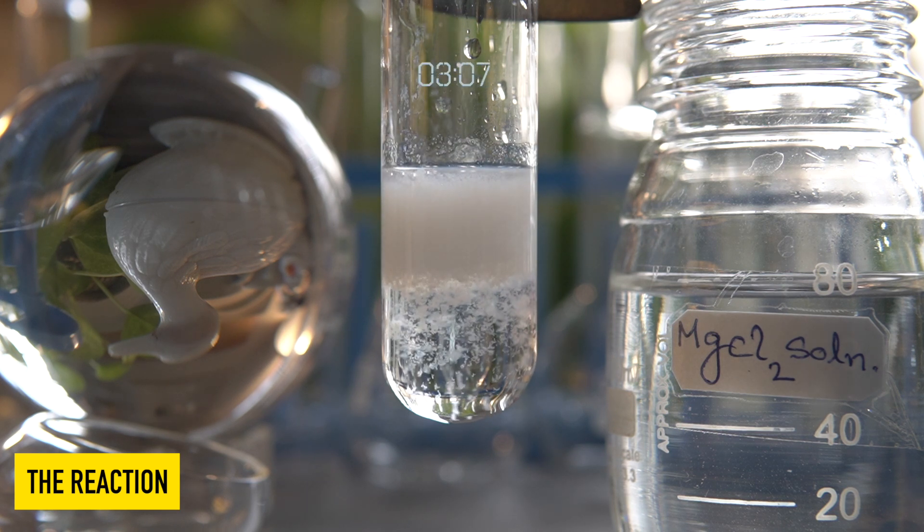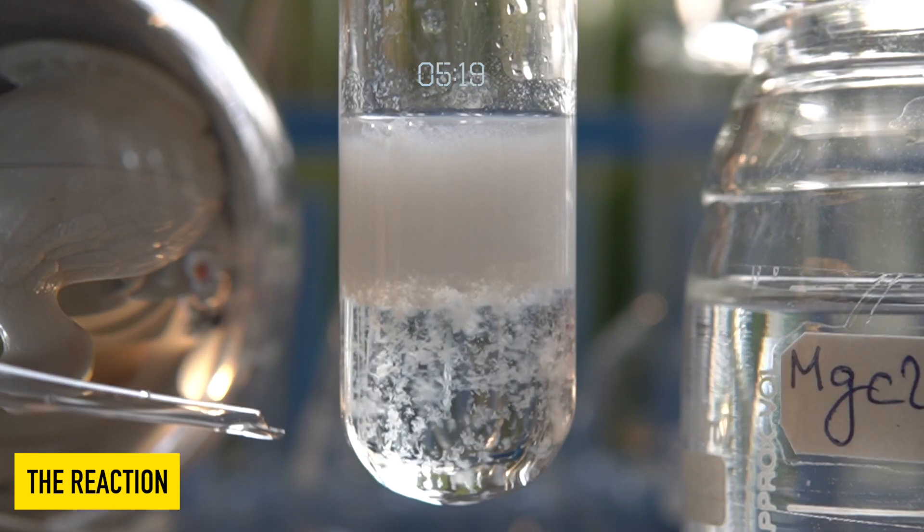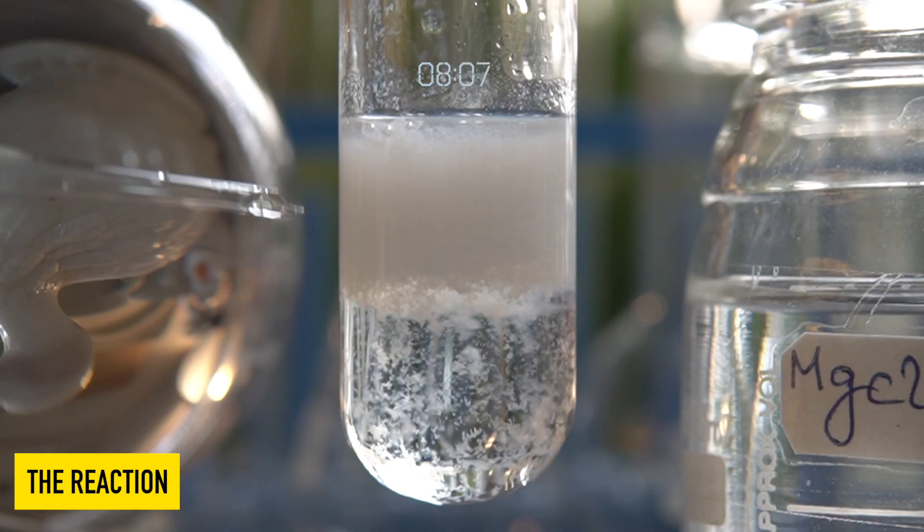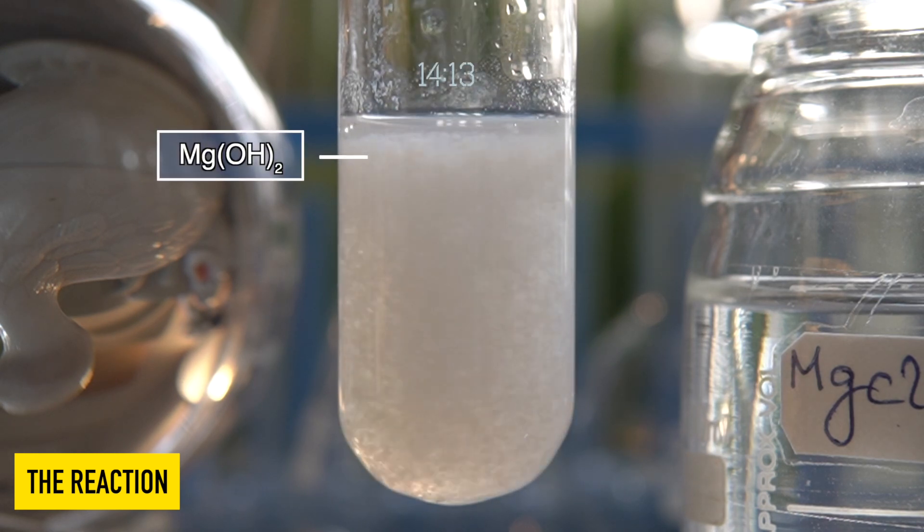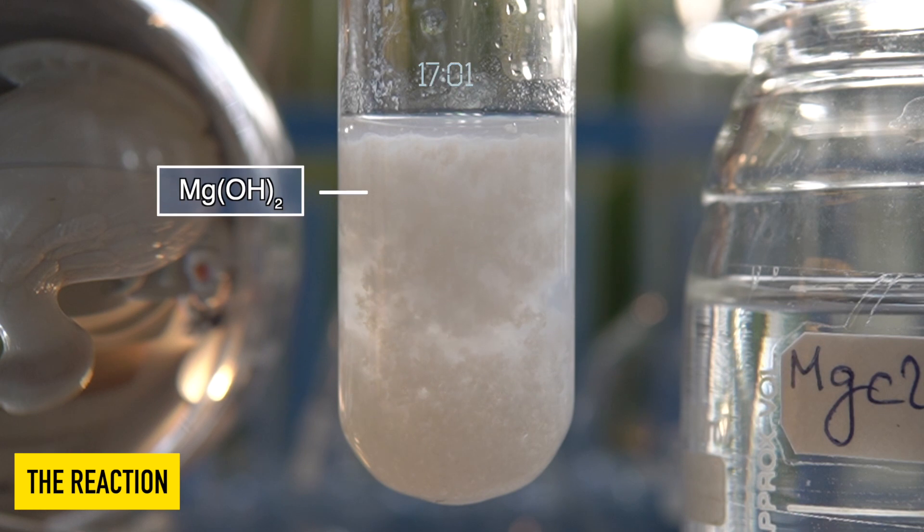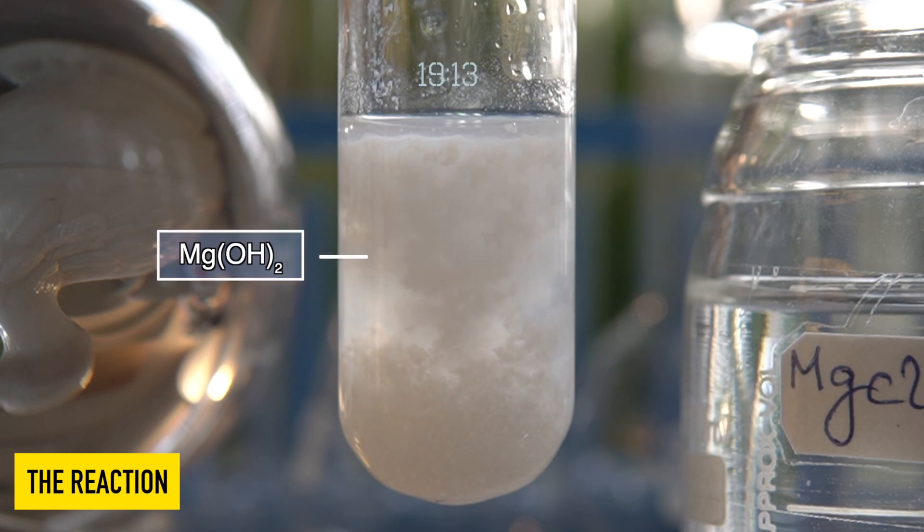The insoluble white precipitate that has been formed at the bottom of the test tube is nothing but magnesium hydroxide. This beautiful precipitation reaction is a good example of a double displacement reaction.